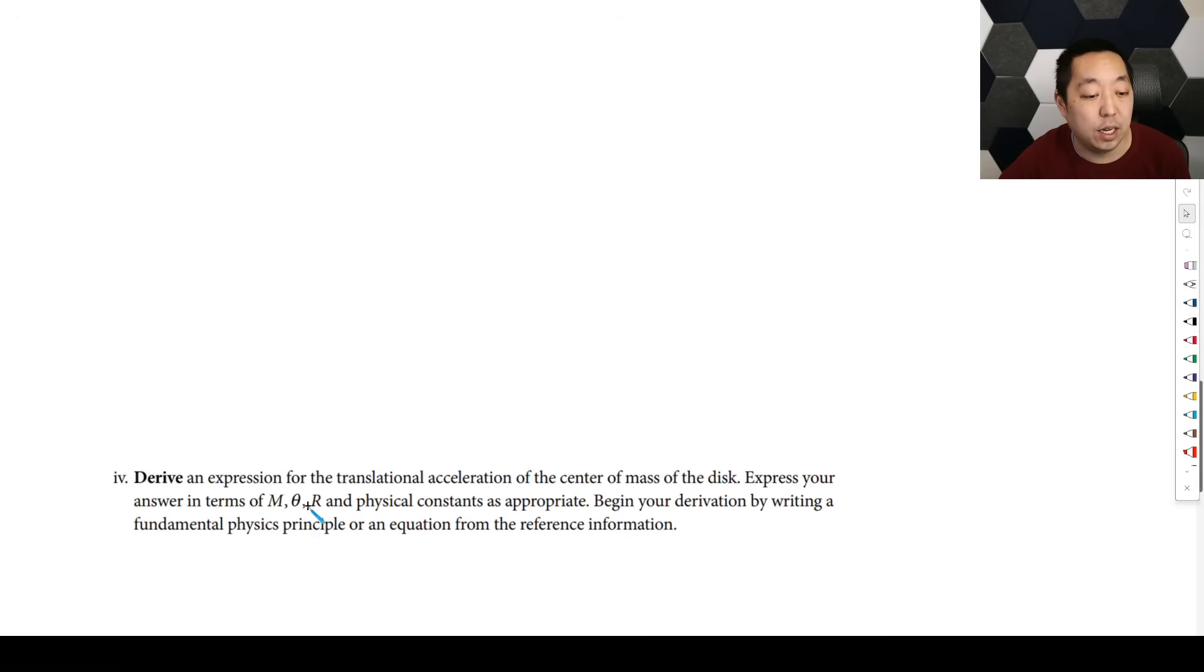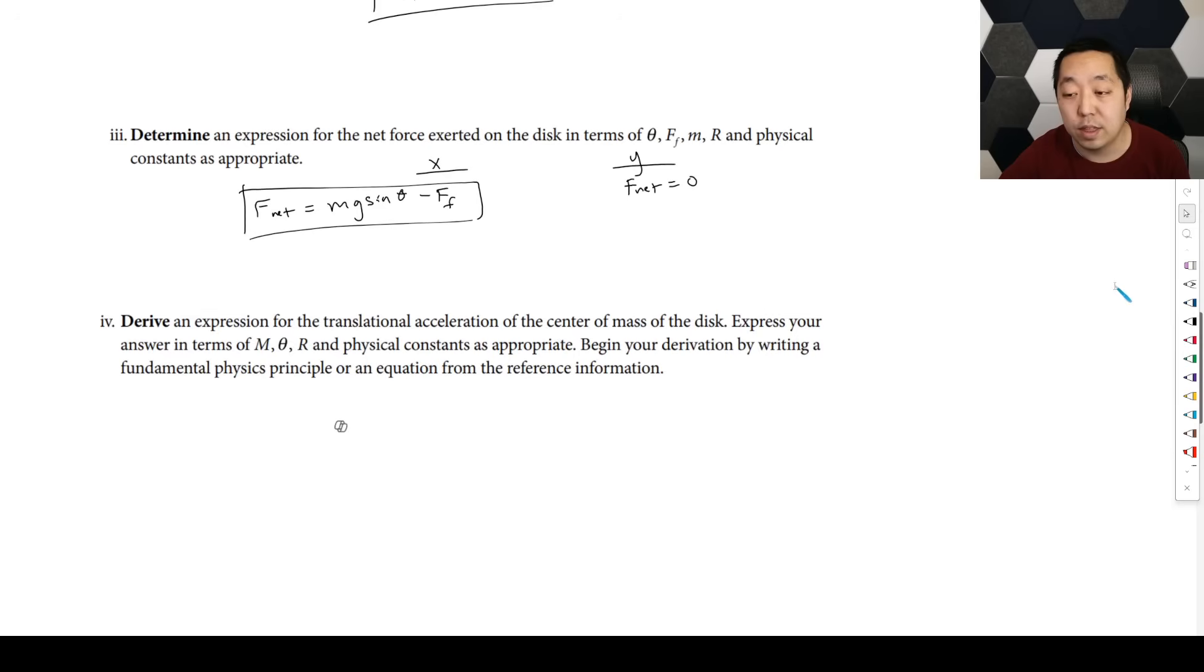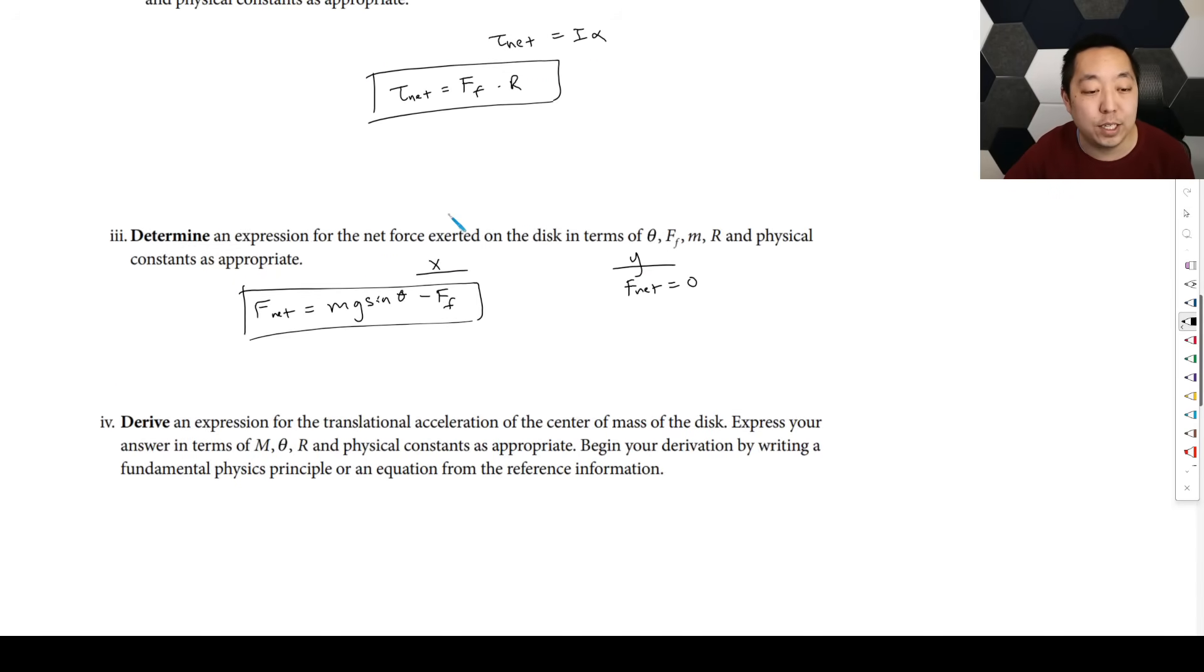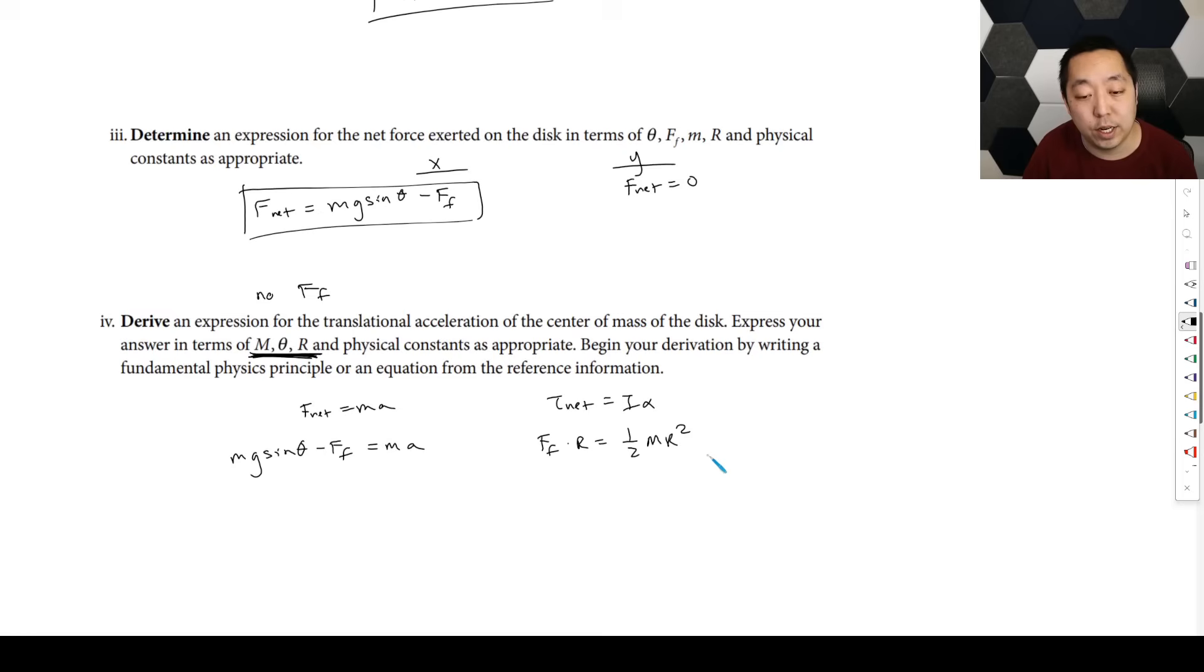Let's see. Then, determine expression for the translational acceleration of the center mass of the disk. Express your answer in terms of m, theta, and r. As appropriate, begin your derivation by writing a fundamental principle. So what do we do after we do a free body diagram? We do F net equals ma, and in this case, we also do net torque equals I alpha. Now notice we can't use the frictional force in here. No force of friction is allowed in here. So that means mg sine theta minus the force of friction is equal to ma, and the net torque is going to be the force of friction times r is going to be the rotational inertia, which is one half mr squared. Because they told us that in the problem, that the rotational inertia of that was mr squared, and then times alpha.